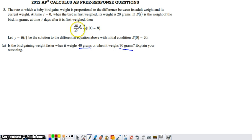But if you look at this derivative, this derivative doesn't have T's within it. The derivative has B's within it. And what B represents, B is the weight of the bird. So we want to know if the bird is gaining weight faster at a B value of 40 or at a B value of 70.